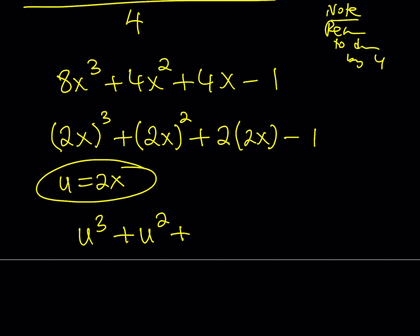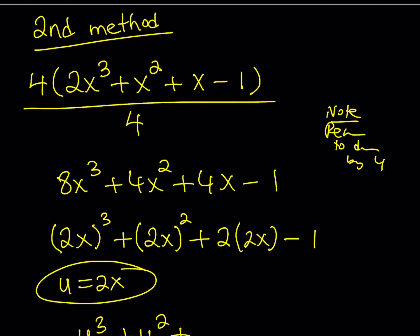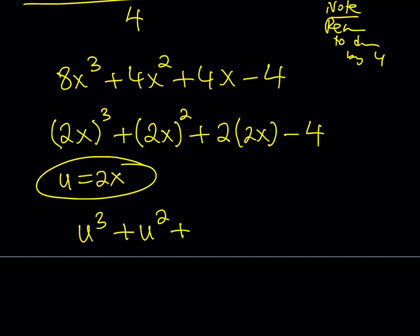When we multiply by 4, this should be a 4. So, we need to go ahead and change this. Now, we have u³ + u² + 2u. Again, the happy birthday song is reminded. Plus minus 4.